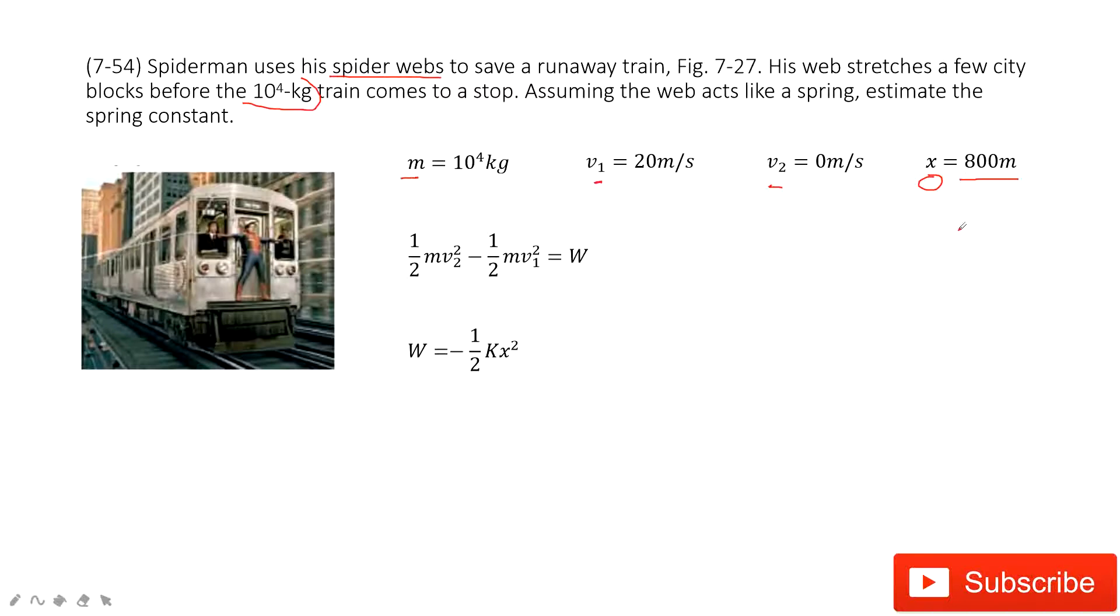This we assume. How can we assume it? Because it tells us the web stretches a few city blocks. So a few city blocks, we consider 800 meters. The initial velocity for the train is 20 meters per second, which is around 40 miles per hour.